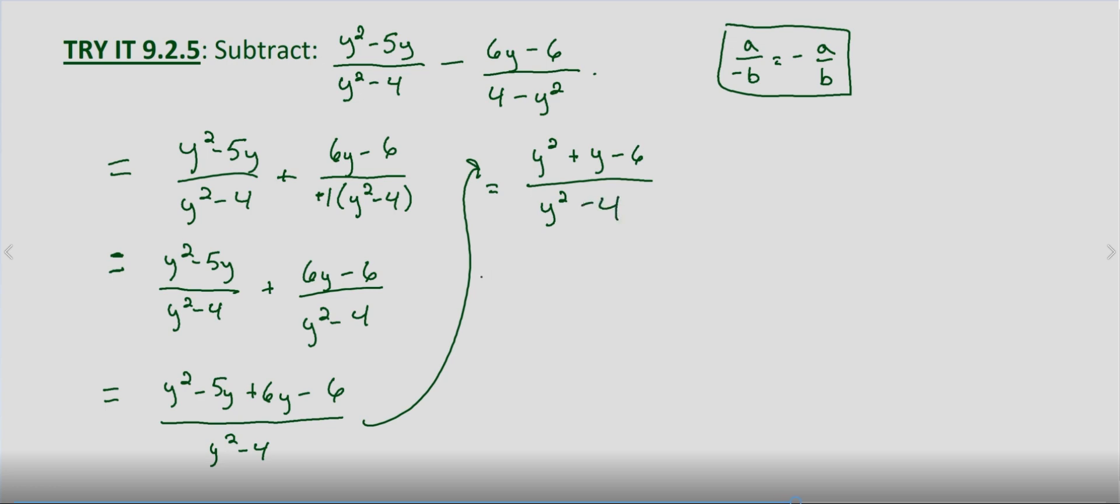And now we factor the numerator and denominator. Y squared plus y minus six, that is y plus three times y minus two, because we want two values that multiply to negative six that add to one.